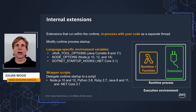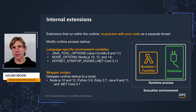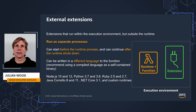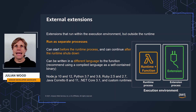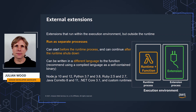Language-specific environment variables work using native language options such as JAVA_TOOL_OPTIONS, NODE_OPTIONS, or .NET startup hooks environment variables. Wrapper scripts allow you to delegate runtime startup to a script which you can configure to pass extra parameter options to the interpreter. An external extension runs as an independent process, separate from the runtime, but still within the execution environment. It can start before the runtime process and continues to run after the function invoke is fully processed. Because external extensions run as their own processes, you can write them in a different language than the function — best done as a self-contained compiled binary compatible with all supported runtimes.